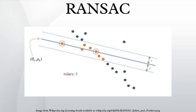Data elements in the dataset are used to vote for one or multiple models. The implementation of this voting scheme is based on two assumptions: that the noisy features will not vote consistently for any single model, and there are enough features to agree on a good model.